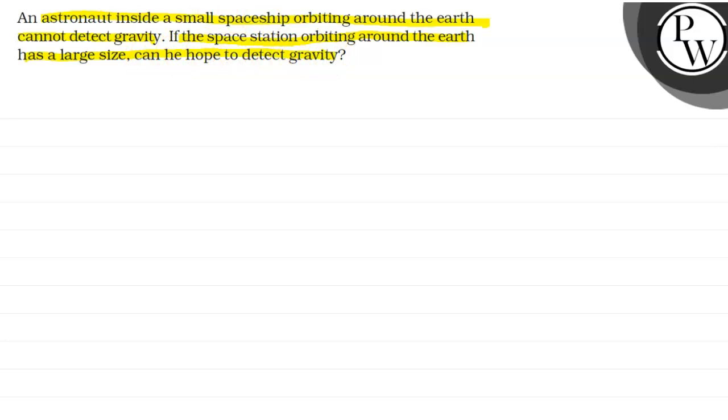That is, an astronaut inside a small spaceship orbiting around the earth cannot detect gravity. But if we have a space station that is orbiting around earth, due to its large size, can it detect gravity? So first, let's see the key concept of this question.